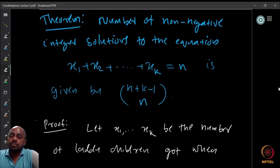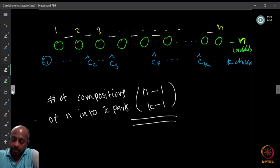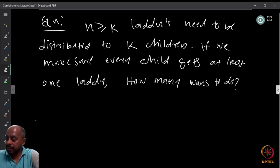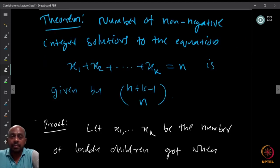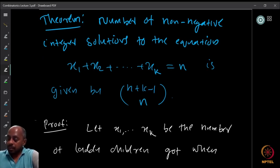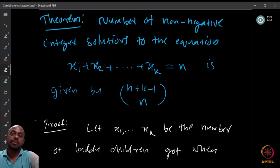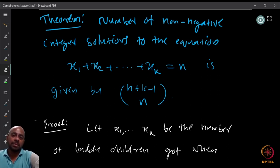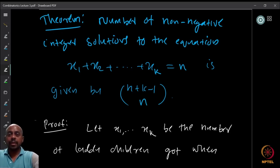How do we prove this? Since we already solved the composition question using sweets, let us try the same approach. Let x1 through xk be the number of laddus each child received when n laddus were distributed. We are still distributing n laddus to k children — but now the distributor may be unfair and give some children nothing.